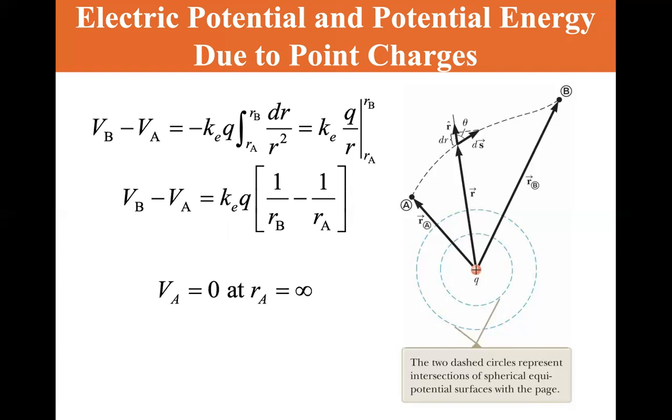It's customary to take VA equals zero at rA equal to infinity. So when the point charge is at infinity, then VA is equal to zero. So V is equal to kₑ times Q divided by r.